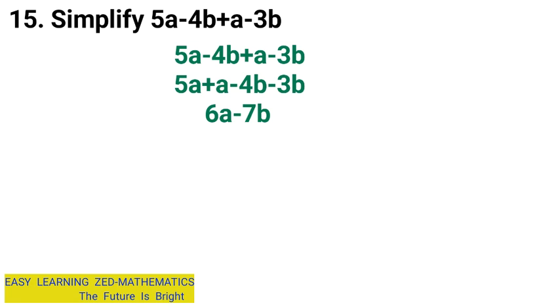So this was the answer. To simplify that expression, 5a minus 4b plus a minus 3b will give us 6a minus 7b.